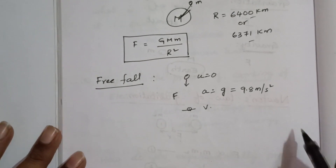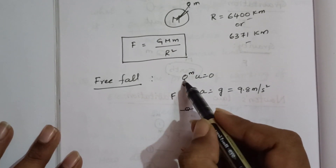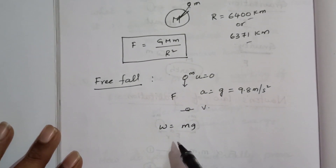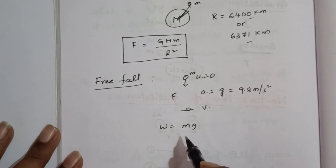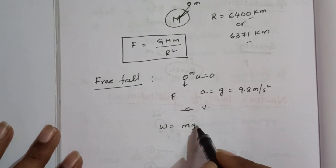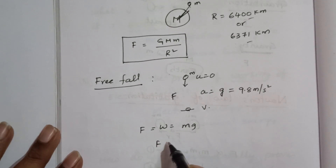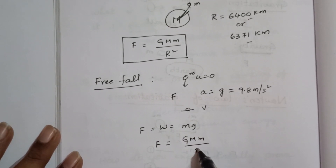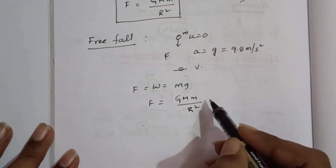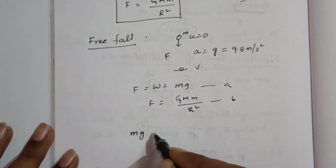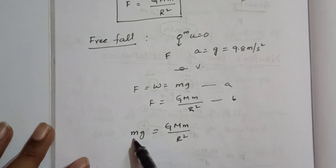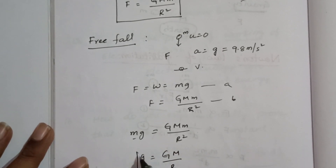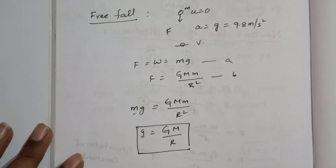To calculate this value: the weight of a body of mass m is m times g, and this weight equals the gravitational force F equals G capital M times small m divided by R squared. Equating the two — m times g equals G M m divided by R squared — the small m cancels on both sides, giving us g equals G times capital M divided by R squared.